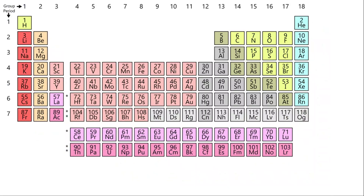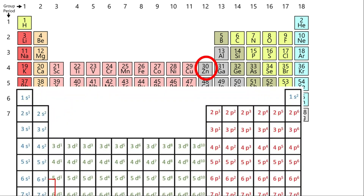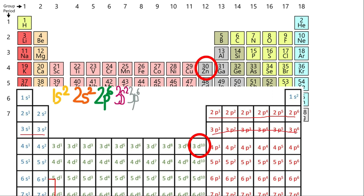Let's try a problem. We are asked to write the electron configuration of zinc. Using the electron configuration table, locate zinc and read from left to right like a paragraph. Start with 1s2 — the two electrons are in the same room. Then 2s2 and 2p6. Then proceed with 3s2, 3p6, 4s2, and 3d10. That is our destination — very easy!